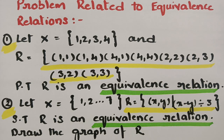As I have taught you what is an equivalence relation in my previous video, please go through the playlist — so many videos are uploaded for your preparation. To show R is an equivalence relation, we have to prove three properties: one is reflexive, next one is symmetric, and the next one is transitive.